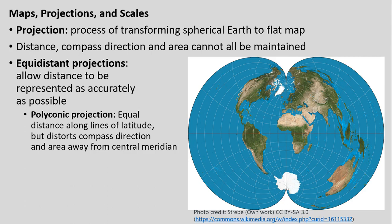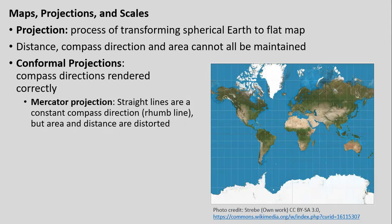For example, equidistant projections, as their name denotes, allow distance to be represented as accurately as possible, oftentimes sacrificing compass direction and area.